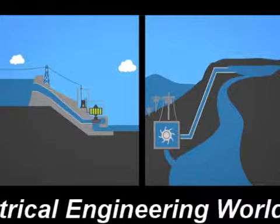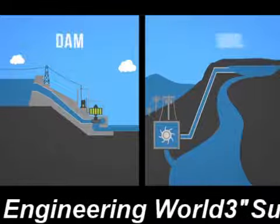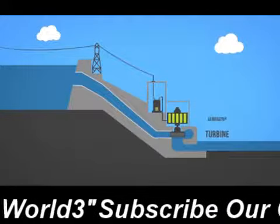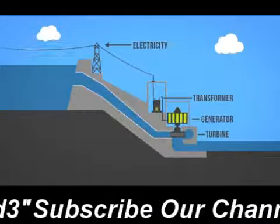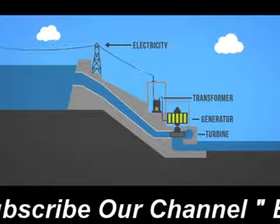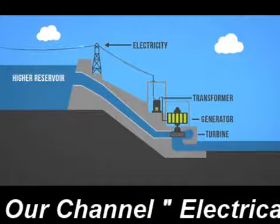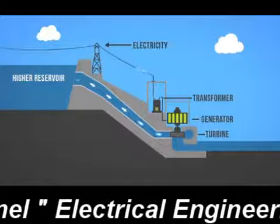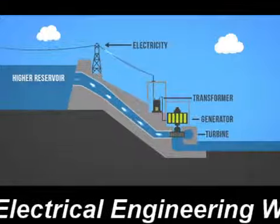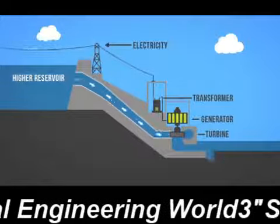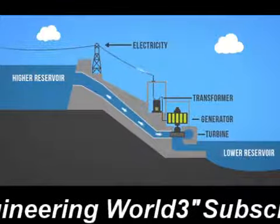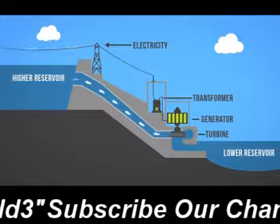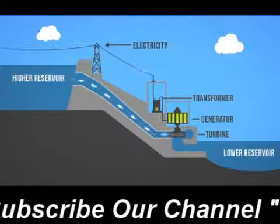There are two main types of hydroelectricity production: dams and run of river. Hydro dams utilize the potential energy from dammed water to produce electricity. A dam is a large barrier constructed to raise the level of water and control its flow. The elevation created by the dam creates gravitational force for turning the turbine when water is released. Some dams also contain an additional reservoir at their base where water is stored to be pumped to the higher reservoir for release when electricity is in demand. This is referred to as pumped storage hydro.